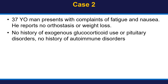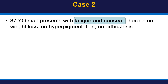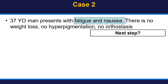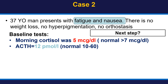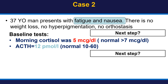Case number two: a 37-year-old man who presented with fatigue and nausea. He reported no orthostasis and no weight loss. He had no history of exogenous glucocorticoids, pituitary disorders, or autoimmune disorders. Fatigue and nausea are common symptoms of adrenal insufficiency but are not specific, so additional testing is needed. Baseline testing showed cortisol low at 5 micrograms per deciliter and ACTH at 12 picomoles per liter — normal range 10 to 60 — a low-normal result. While somewhat abnormal, this is not completely diagnostic of adrenal insufficiency, so additional dynamic testing is required.